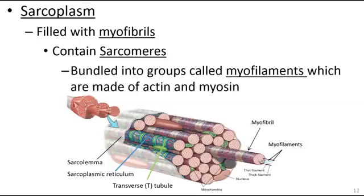Sarcomeres are bundled into groups called myofilaments — 'myo' means muscle and 'filament' refers to a small thread-like thing. These are actually made of two proteins: one is called actin and one is called myosin.